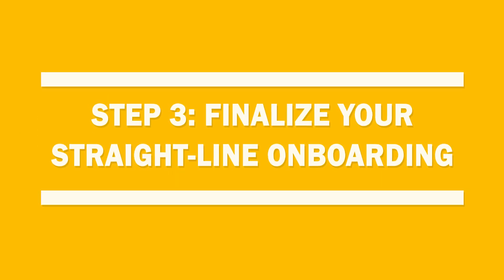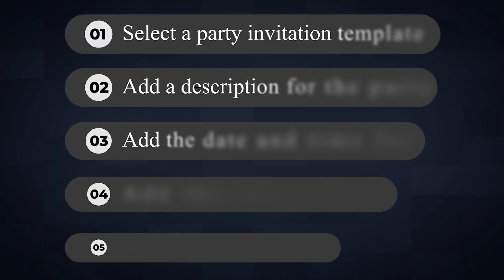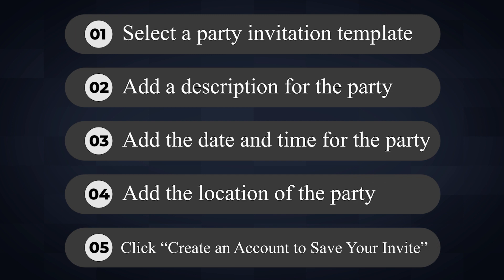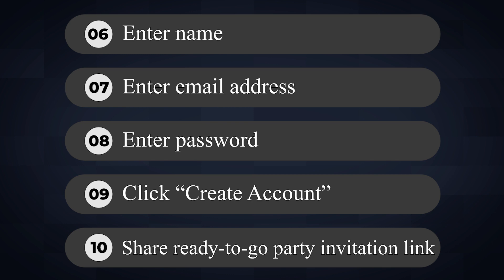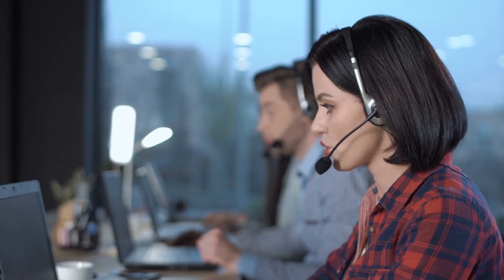The final step to designing your straight-line onboarding is to finalize it. Back to those color-coded labels — once you've labeled each step in the onboarding path, gather the green ones together. This is the first iteration of your straight-line onboarding, because they are the steps users need to take to experience a product's value. Here's the straight-line onboarding for Party Parrot: one, select a party invitation template; two, add a description for the party; three, add a date and time for the party; four, add the location of the party; five, click create an account and save your invite; six, enter your name; seven, enter your email address; eight, enter your password; nine, click create an account; ten, share a ready-to-go party invitation link. It's important to finalize this list with each team within your company — from product to engineering to customer success. Do they agree with the necessary steps? Would they add back steps that were removed or delayed? Would they remove any steps still there?